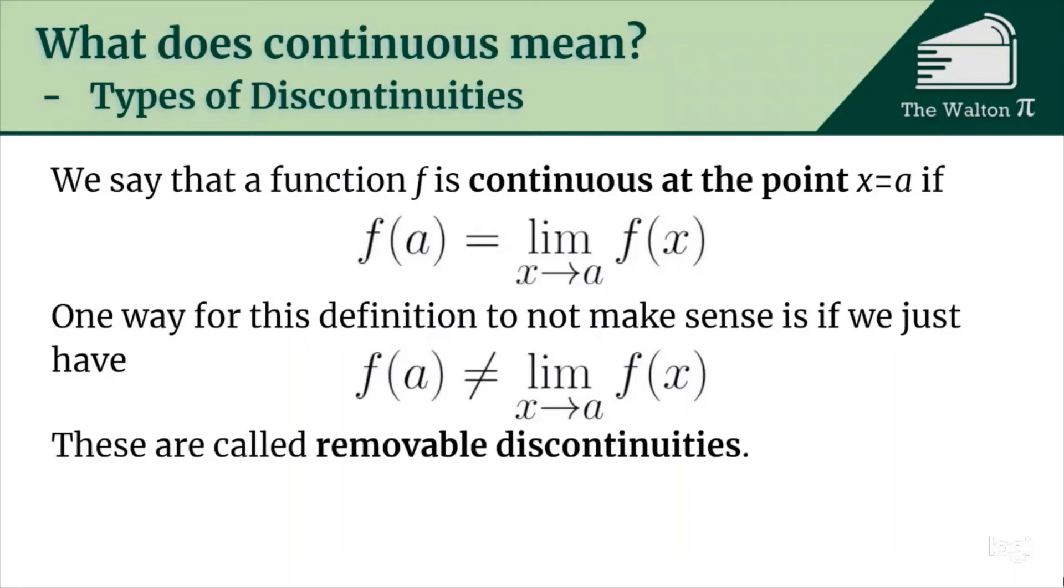And in two dimensions they would look something like this where we have a function where the limit exists so that open circle, but the value of the function is at that closed circle which is some different value.